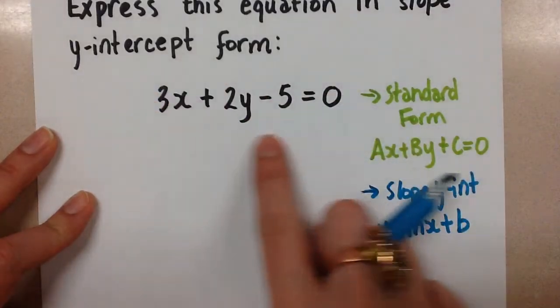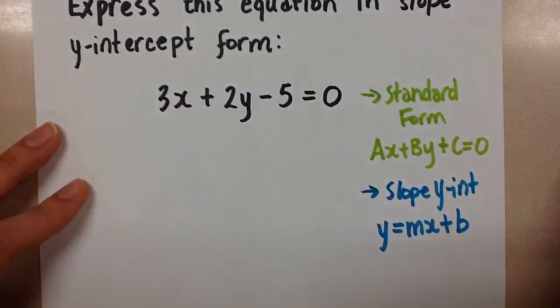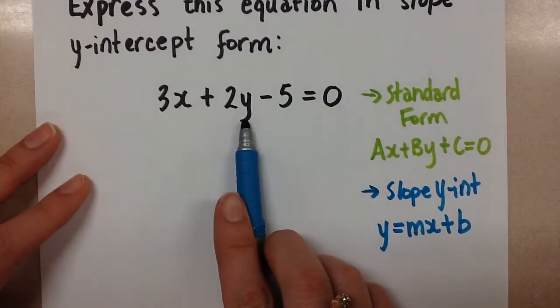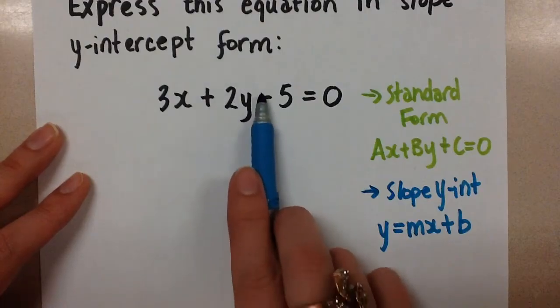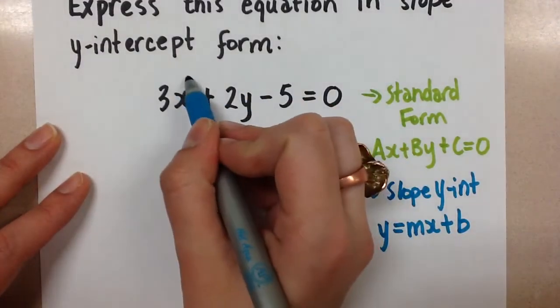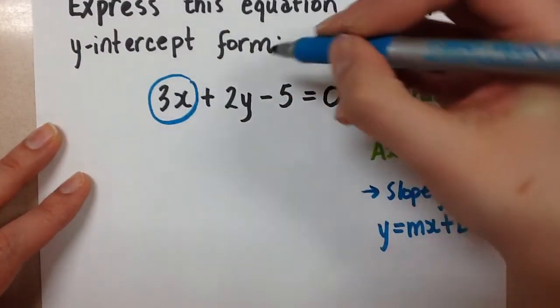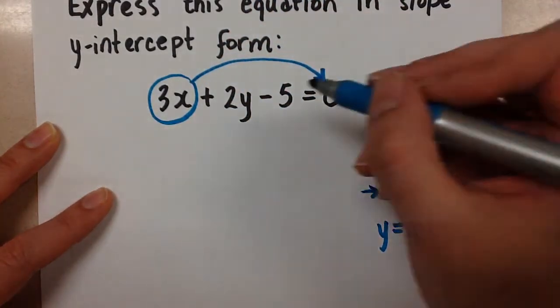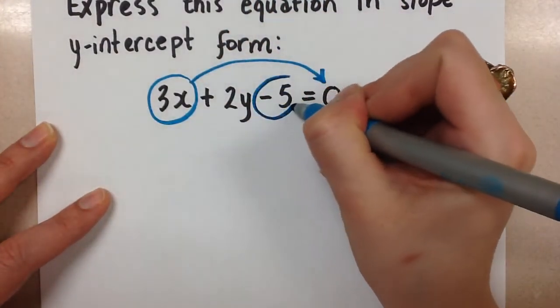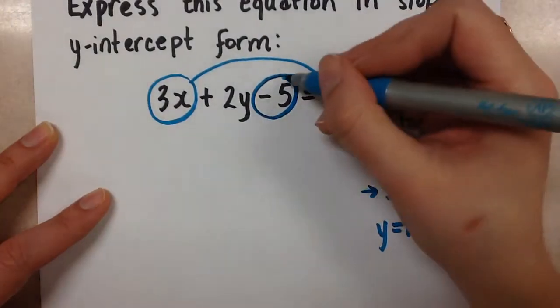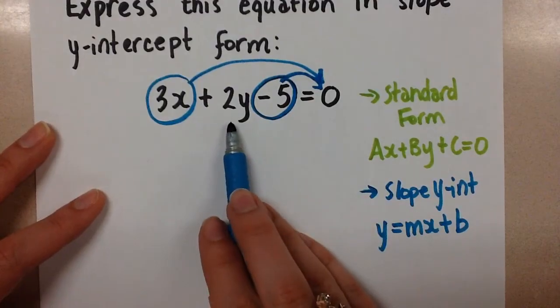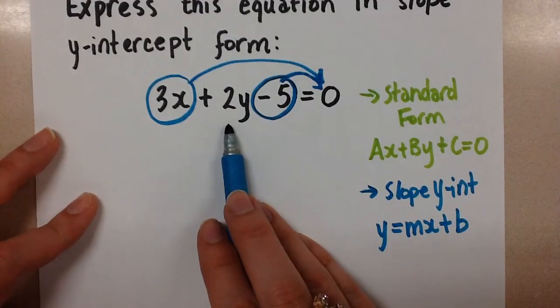So let's look at the equation we're given: 3x plus 2y minus 5 equals 0. We need to get the y by itself. In order to get this y term by itself, I'm going to move this x term, the whole thing, over to the other side of the equal sign. And I'm going to move this constant term, the negative 5, to the other side of the equal sign as well. And then that will leave us with the 2y on its own.